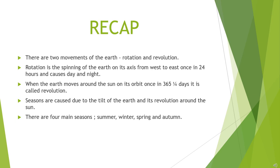This is all about the movements of the earth and their effects. Let us do a small recap. There are two movements of the earth: rotation and revolution. Rotation is the spinning of the earth on its axis from west to east once in 24 hours, and it causes day and night. When the earth moves around the sun on its orbit once in 365 and one-fourth days, it is called revolution. Seasons are caused due to the tilt of the axis of the earth and its revolution around the sun. There are four main seasons: summer, winter, spring, and autumn.